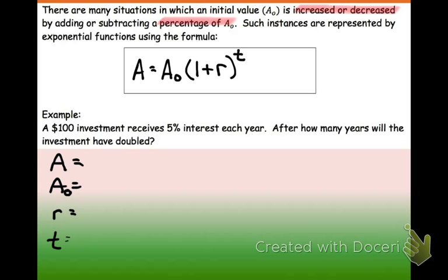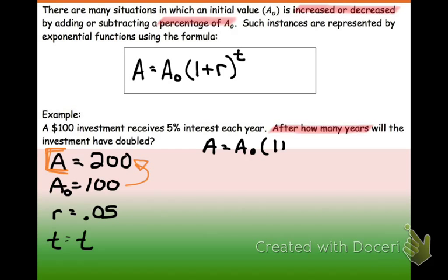A $100 investment receives 5% interest each year. So our initial amount is $100, and it receives 5% interest, so that's 0.05. After how many years will the investment have doubled? So that's saying when do we want our total amount here, we want that to be doubled. So doubling would be at $200, because you're doubling $100. And we don't know what our time is, so we are going to use time, because they're saying after how many years.